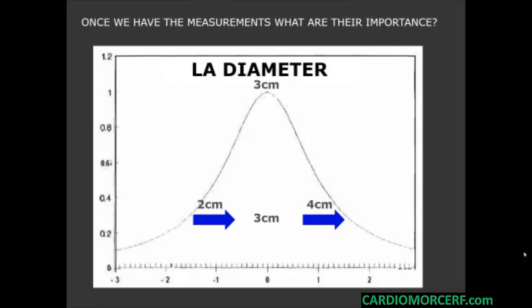Now let's consider the anterior posterior diameter of a normal left atrium in a population. Let's say that the mean value of this measurement is 3 cm. The maximal normal value is 4 cm, and the minimal 2 cm. However, when you are studying a patient, you are not studying a population. You are studying one single patient. That is the big problem with measurements.